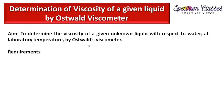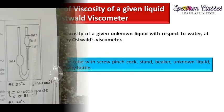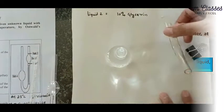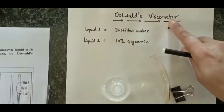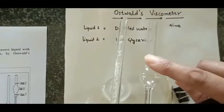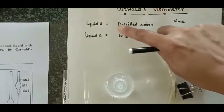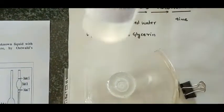Before discussing all these points, let me tell you what glass apparatus and other equipment are required for this experiment. We require a rubber tube, a pinch cock, an Oswald viscometer, and liquid one — that is distilled water.